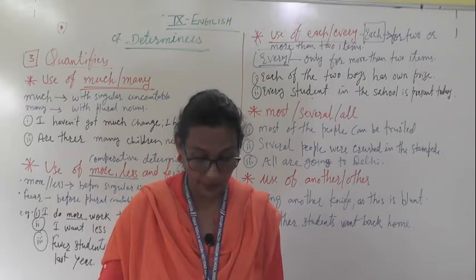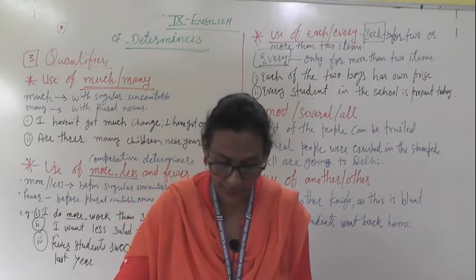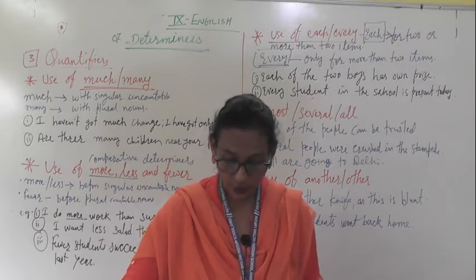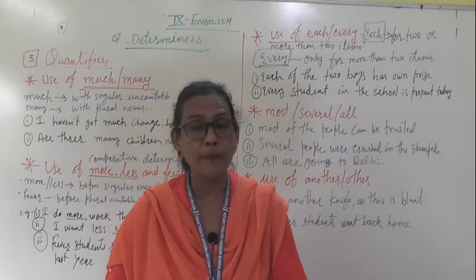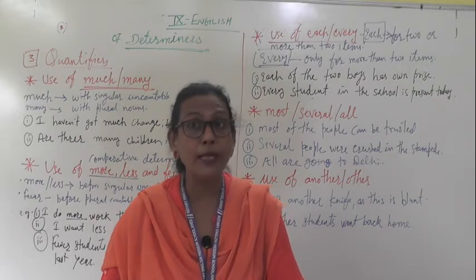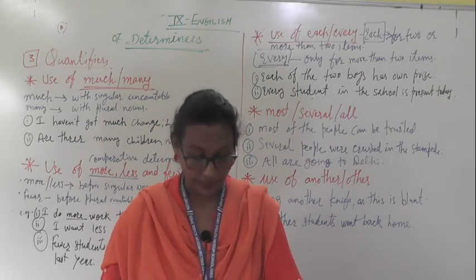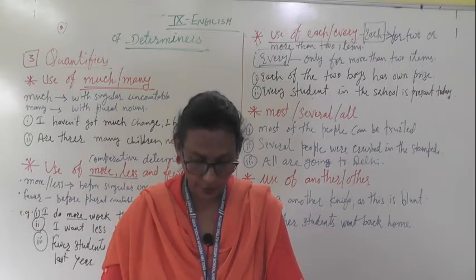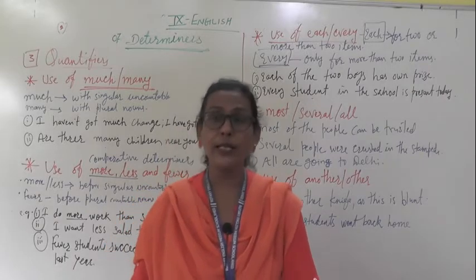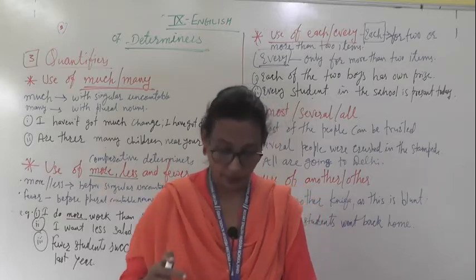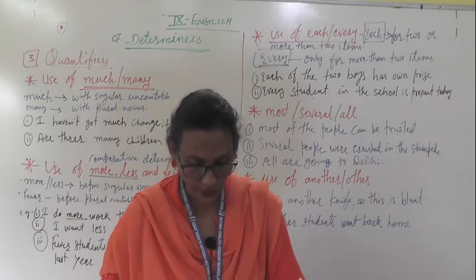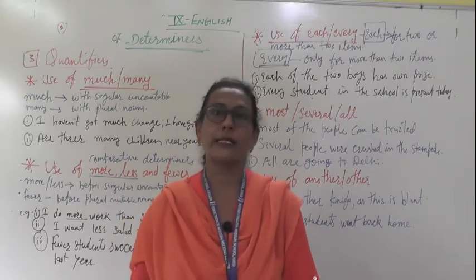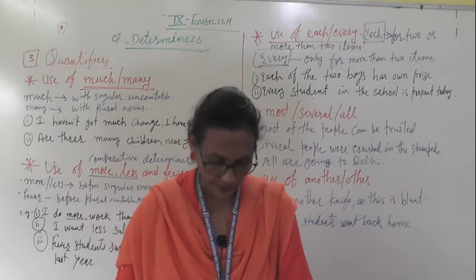For example: 'Is there much unemployment in that area?' 'How many eggs have been used in this cake?' 'Do you think many people will come?' 'The rain was pouring down in torrents, but there wasn't much wind.' We generally use much and many in interrogative and negative sentences.